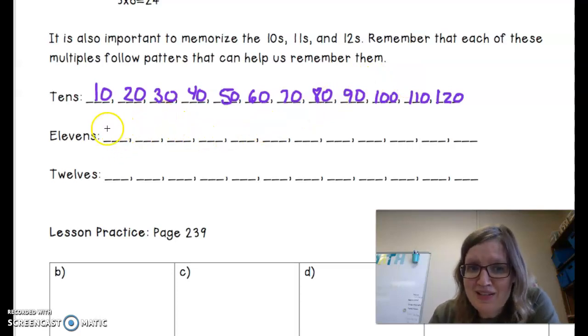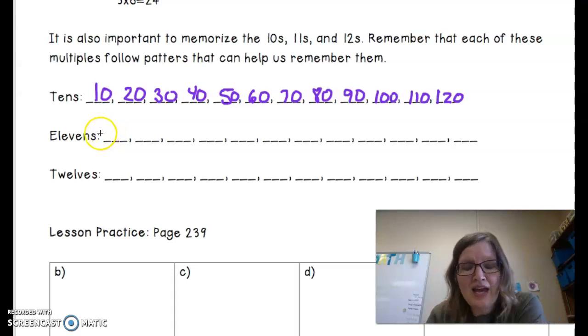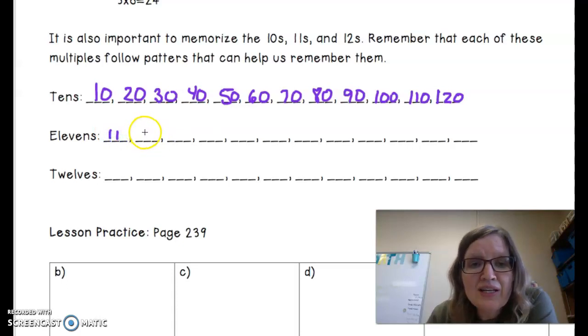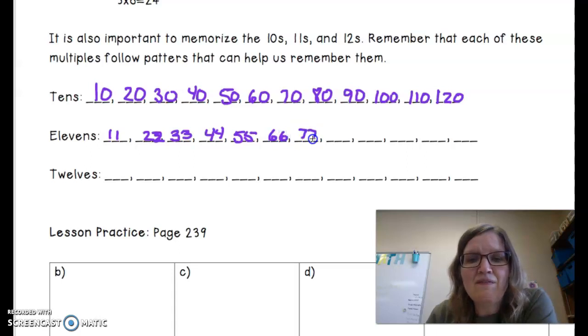11s are just about as easy as 10s, although there are a few at the end that I have to personally think about. So we have 11 times 1 is 11. 11 times 2 is 22. 3 times 11 is 33. 4 times 11 is 44. 5 times 11 is 55. 6 times 11 is 66. 7 times 11 is 77. 8 times 11 is 88. 9 times 11 is 99. 10 times 11, I have to think about that, 110.